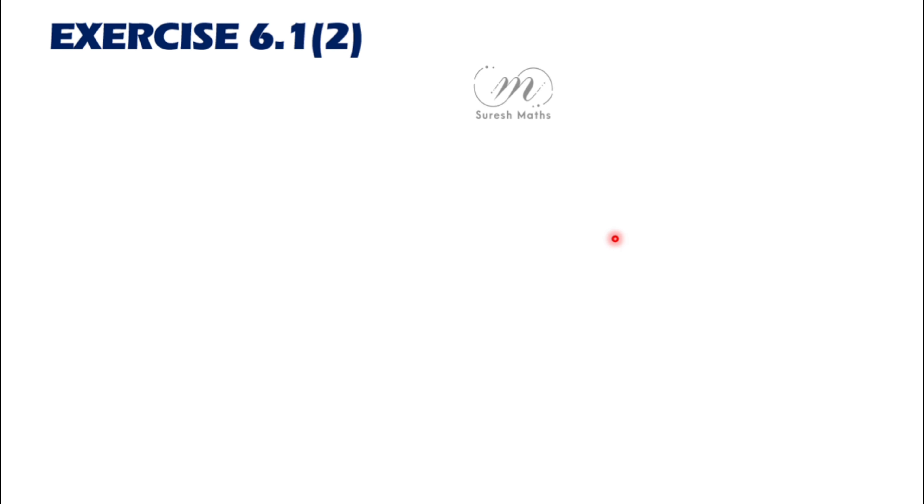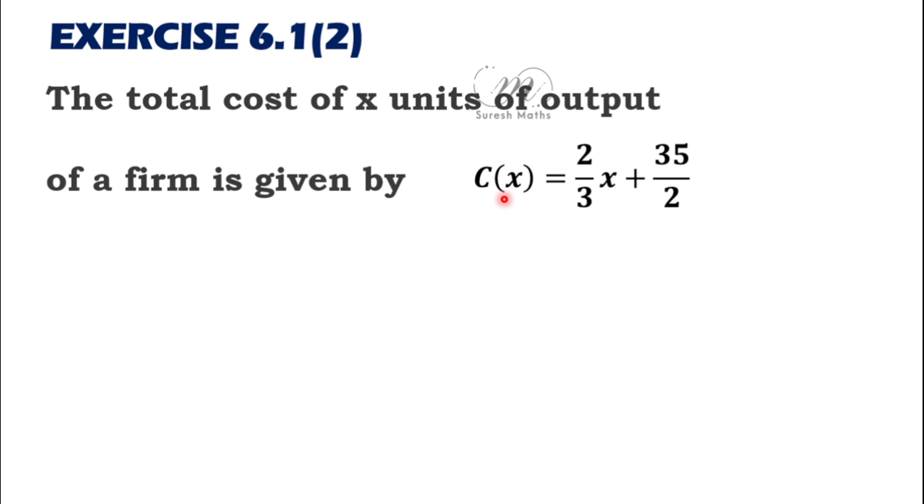Exercise 6.1, number two. The total cost of x units of output of a firm is given by the cost function C(x) = 2/3x + 35/2.